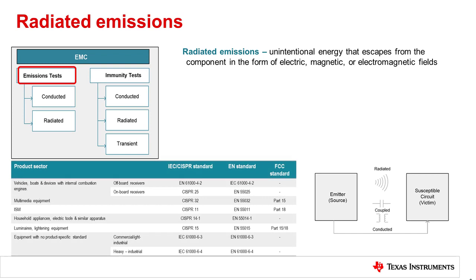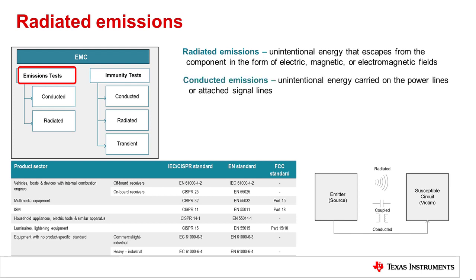The permissible levels of radiated emissions generated by an end product are regulated by numerous governing bodies, and this table provides a view of some of the most common standards for a given product sector. Commercial products must be carefully designed to minimize the amount of EMI produced during normal operation. Conducted emissions describes the unintentional energy carried on the power lines or attached signal lines. When conducted emissions are coupled into nearby conductors, they often result in unwanted noise or operational errors within the system.